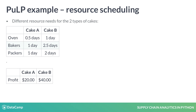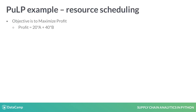Additionally, the profit for the cakes are different. We want to know how many of each type of cake we should make to maximize our profits. Remember that our profits are subject to the different constraints.